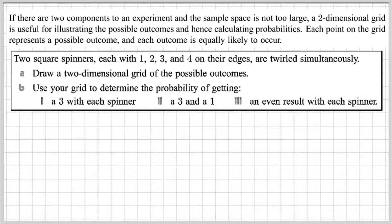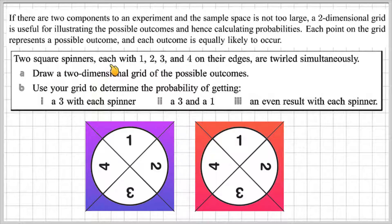Now let's deal with a very quick example. Two square spinners, each with 1, 2, 3, and 4 on their edges, are twirled simultaneously. Part A, draw a two-dimensional grid of the possible outcomes. Part B, use your grid to determine the probability of getting: i) a 3 with each spinner, ii) a 3 and a 1, iii) an even result with each spinner.